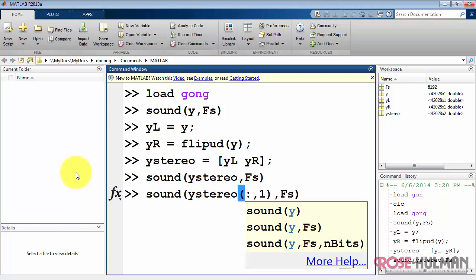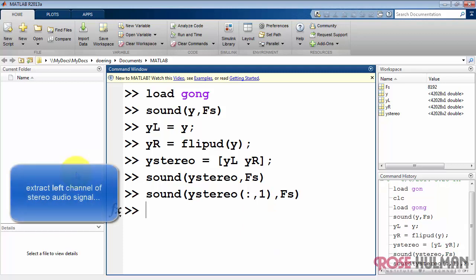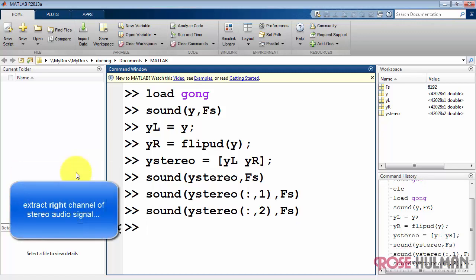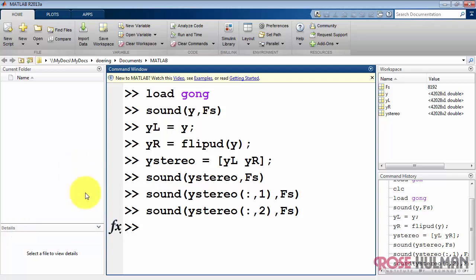Now if you wanted to extract only the left channel that's easy. Use the colon operator comma one. And if you only want the right channel, that would be colon comma two.